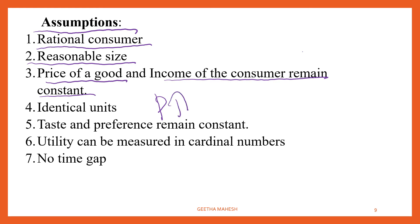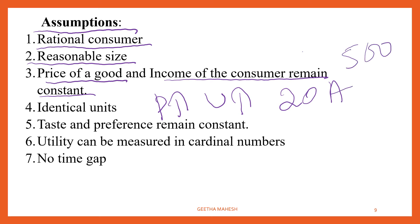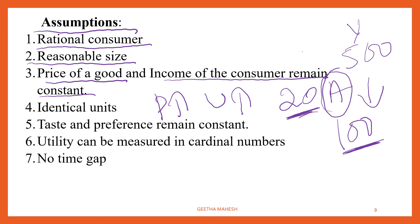If the price of a good increases, then psychologically the consumer may think the quality of the product has increased, so utility may increase. Similarly, if a consumer pays 20 rupees for a product when his income was 500 rupees, and his income decreases to 100 rupees, he may derive greater utility from that same product. Another assumption is identical units — when you take a number of apples, all 10 apples should have the same size, color, and taste; the product should be homogeneous. Also, the taste and preference of the consumer should remain constant throughout the experiment.